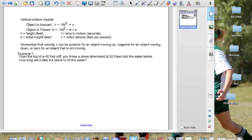Now remember that velocity v can be positive for an object moving upward, negative for an object moving downward, or zero for an object that is not moving. And if it's zero, then really you're doing a drop model. You're not adding any velocity, so it becomes a drop model problem.